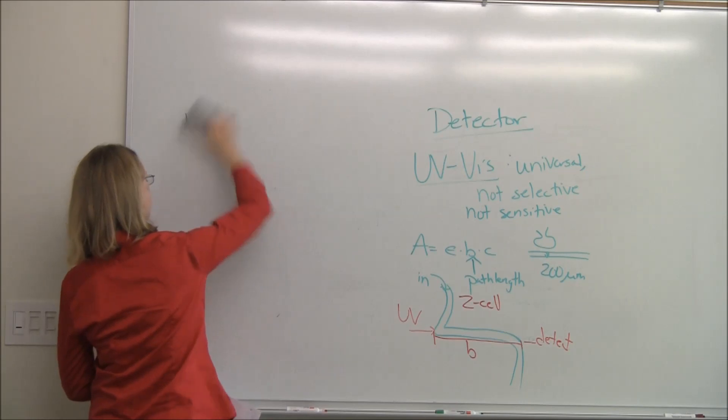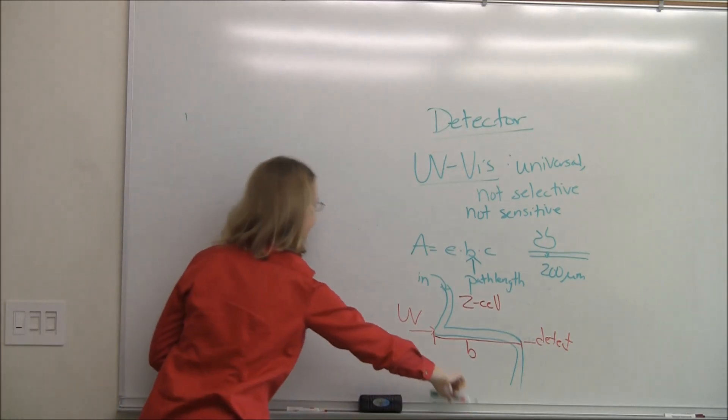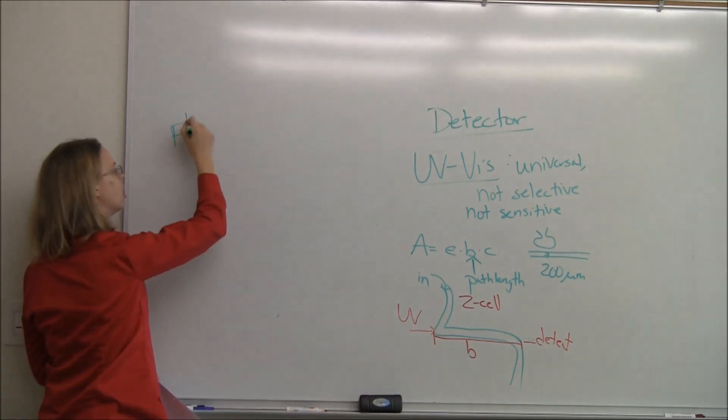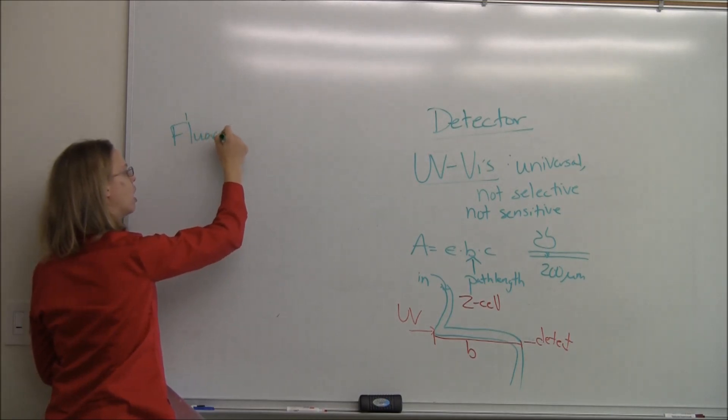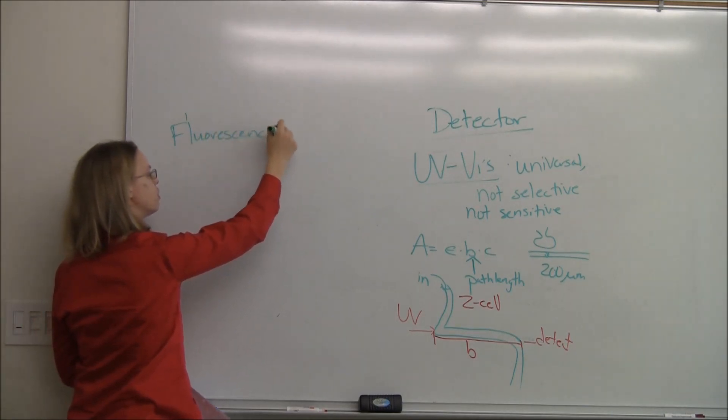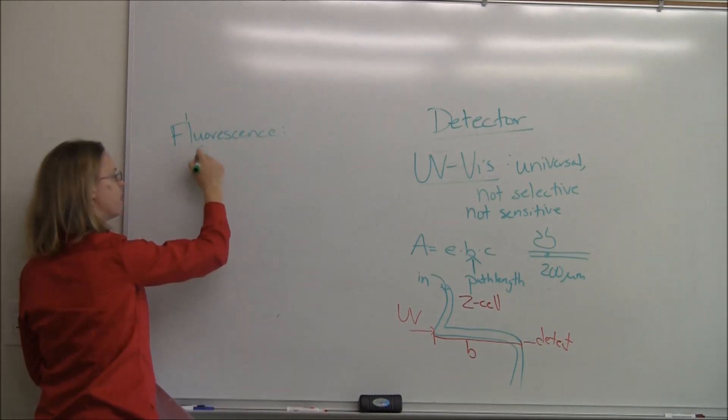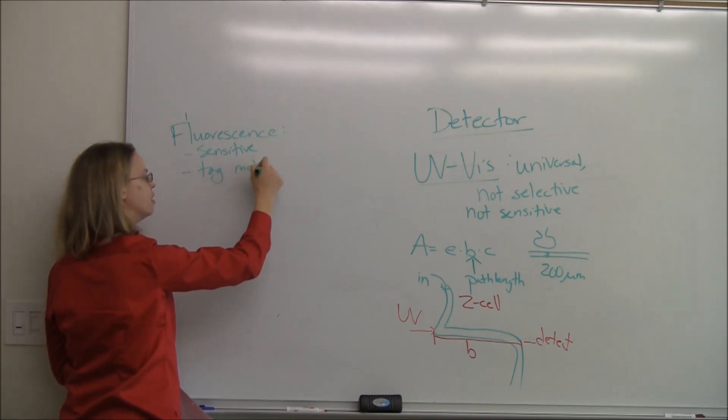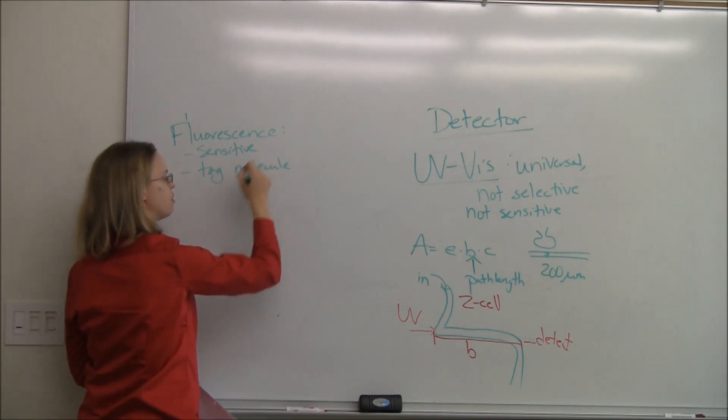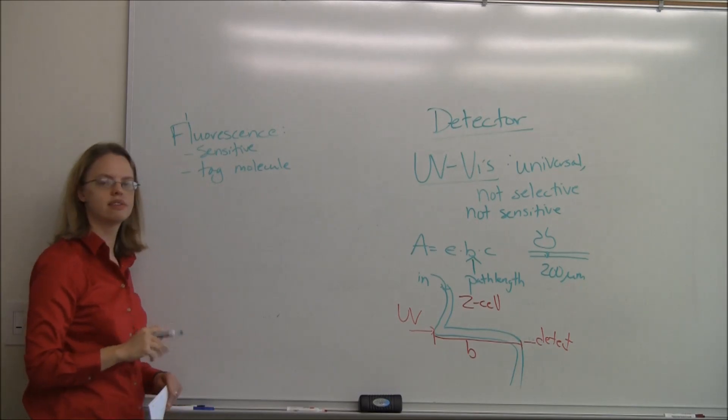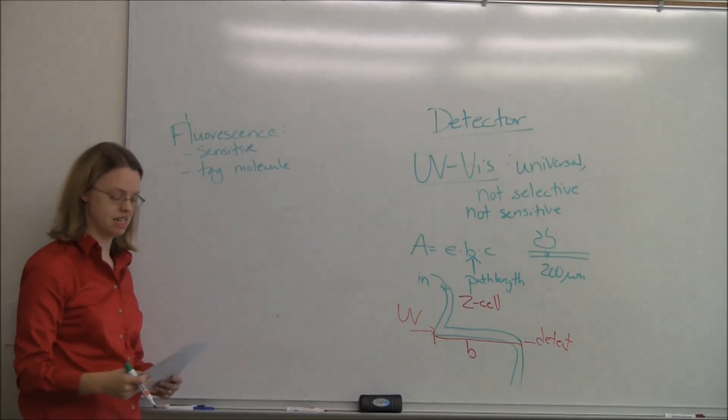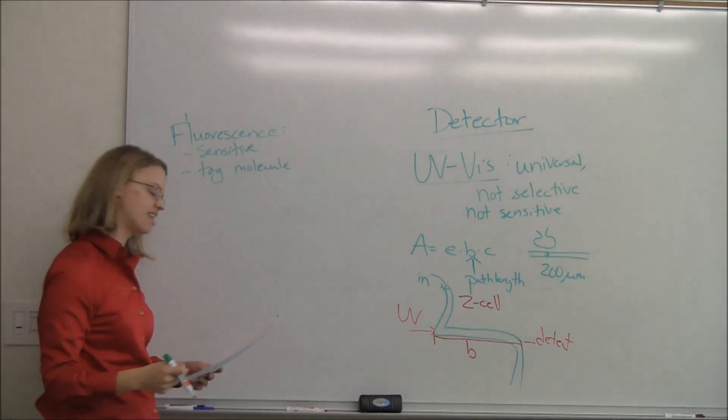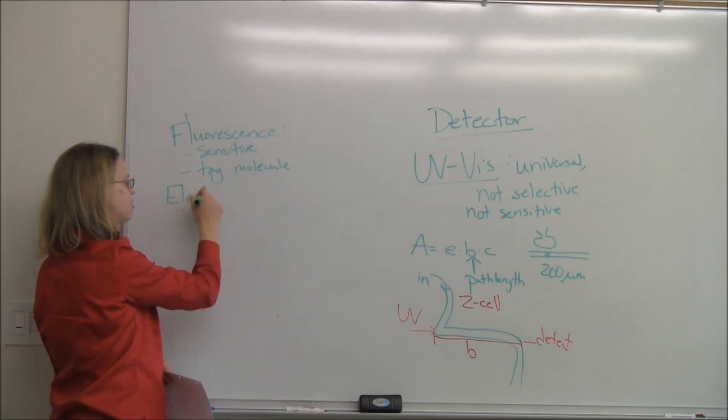There are other things you can use. You could use fluorescence. It's very sensitive, so that's the pro to doing fluorescence. The con is that you must almost always tag your molecule. Most things are not fluorescent, and so if you want to do a fluorescence detection, you've got to make sure it's fluorescent. If it's not, you've got to tag it. So that's kind of difficult.